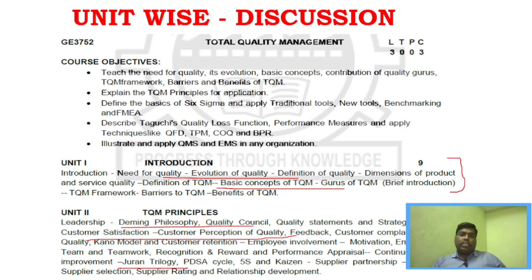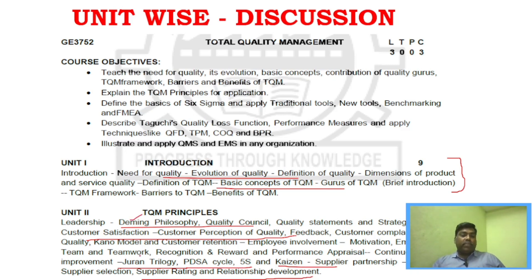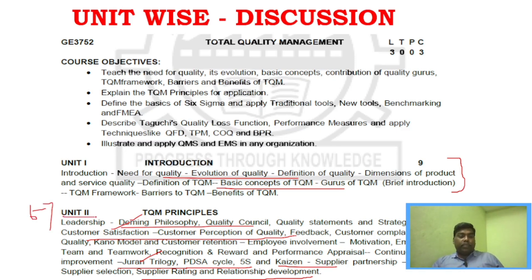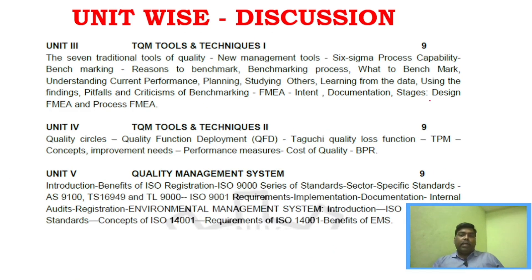Unit 2 in the 2021 regulation covers some topics that were in Unit 1 of the 2017 regulation. Very important questions include the PDSA cycle, Kaizen, supplier rating, Deming philosophy, Juran Trilogy, and customer satisfaction. If you study around 6 to 7 questions in Unit 2, you can cover it well. Also look at rewards and recognition, employee involvement — all of these are very important.